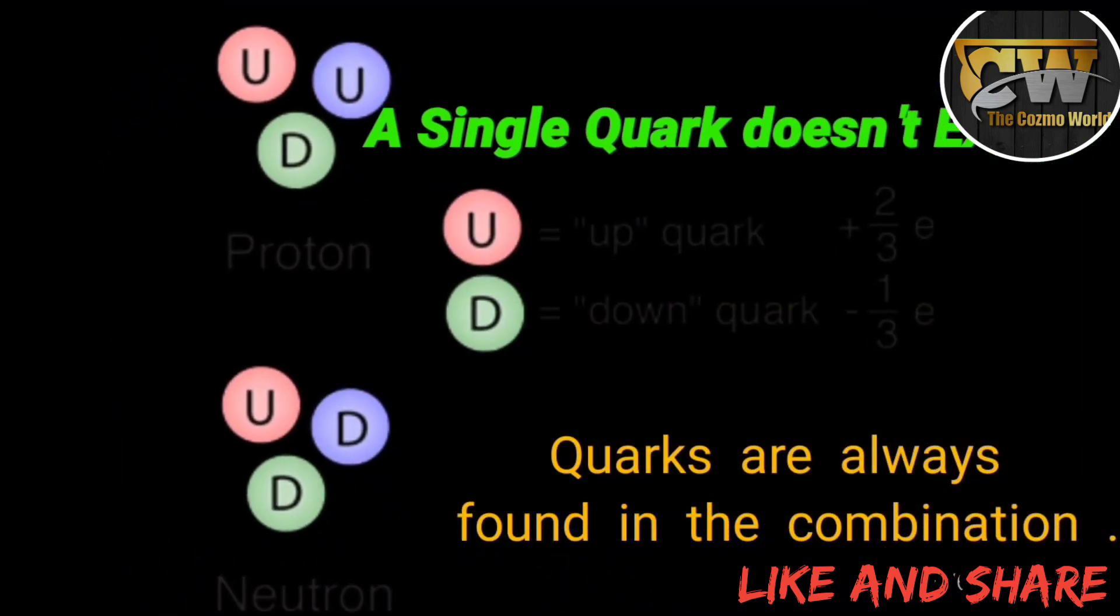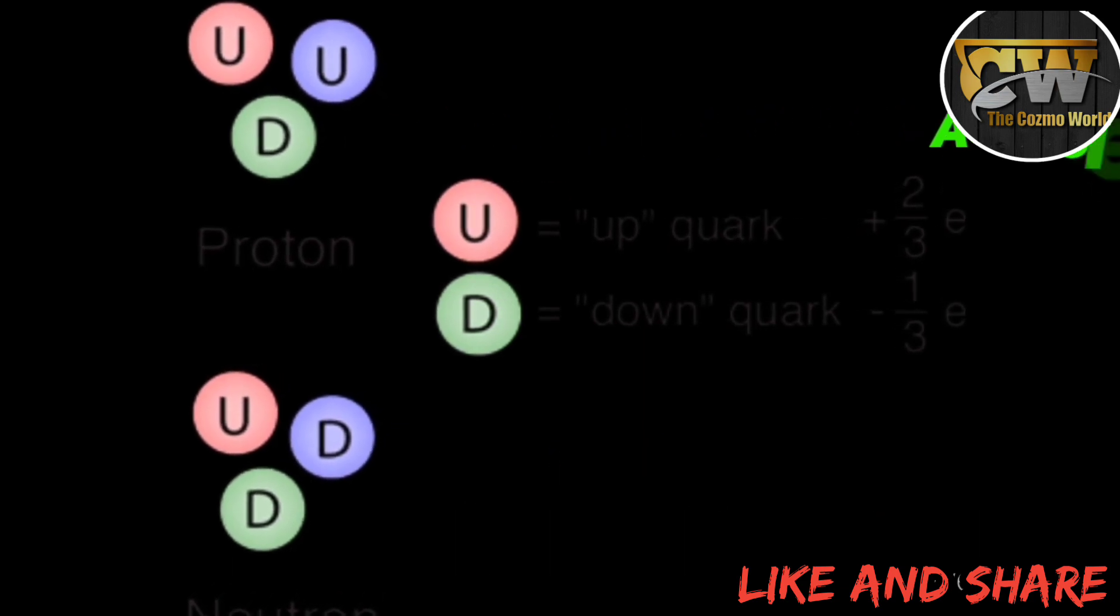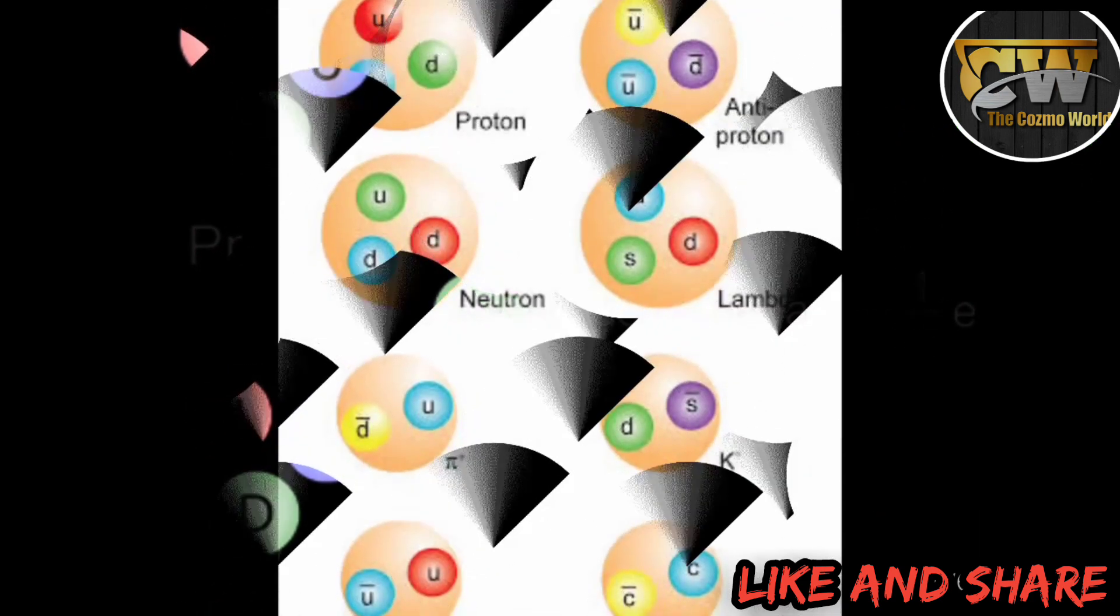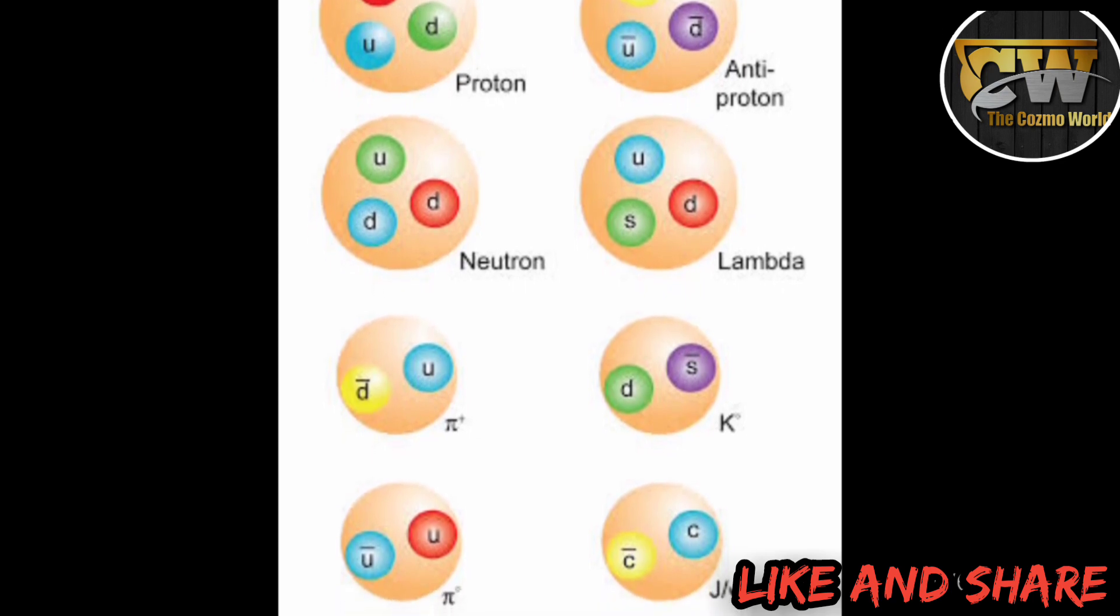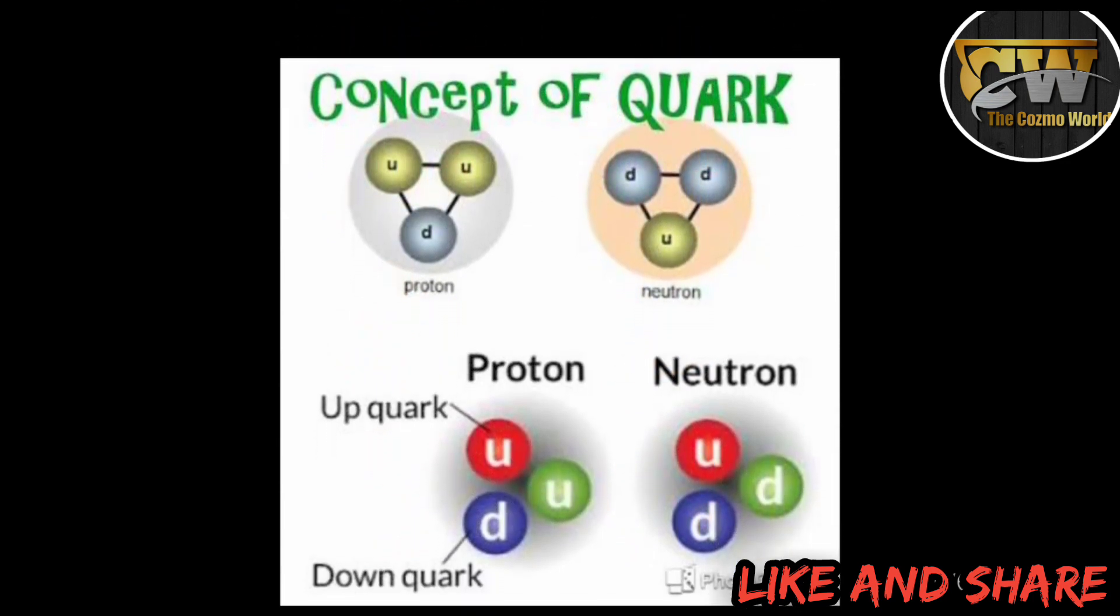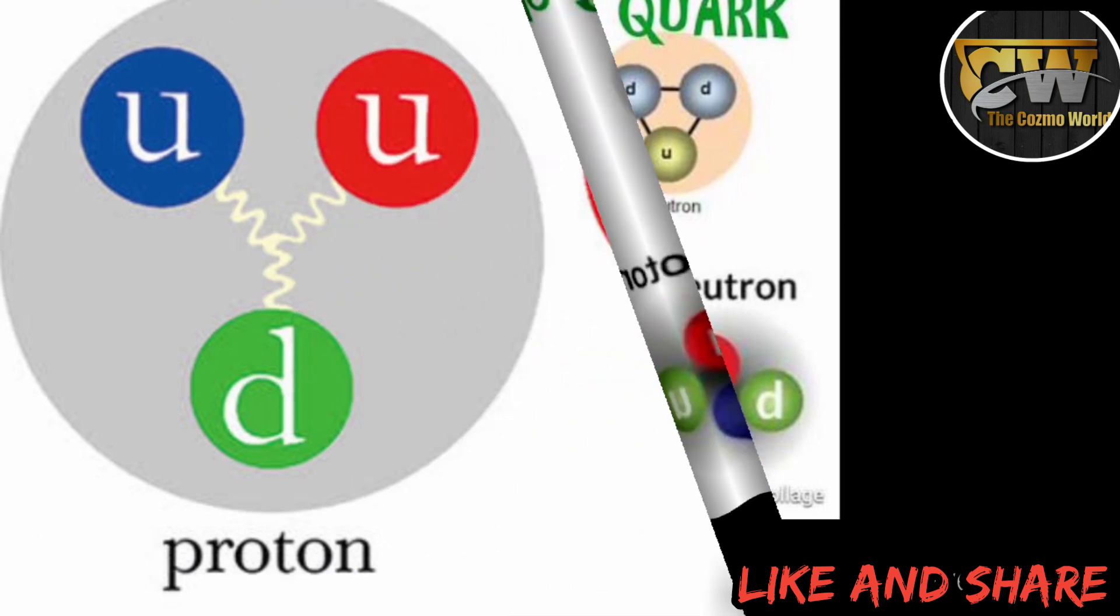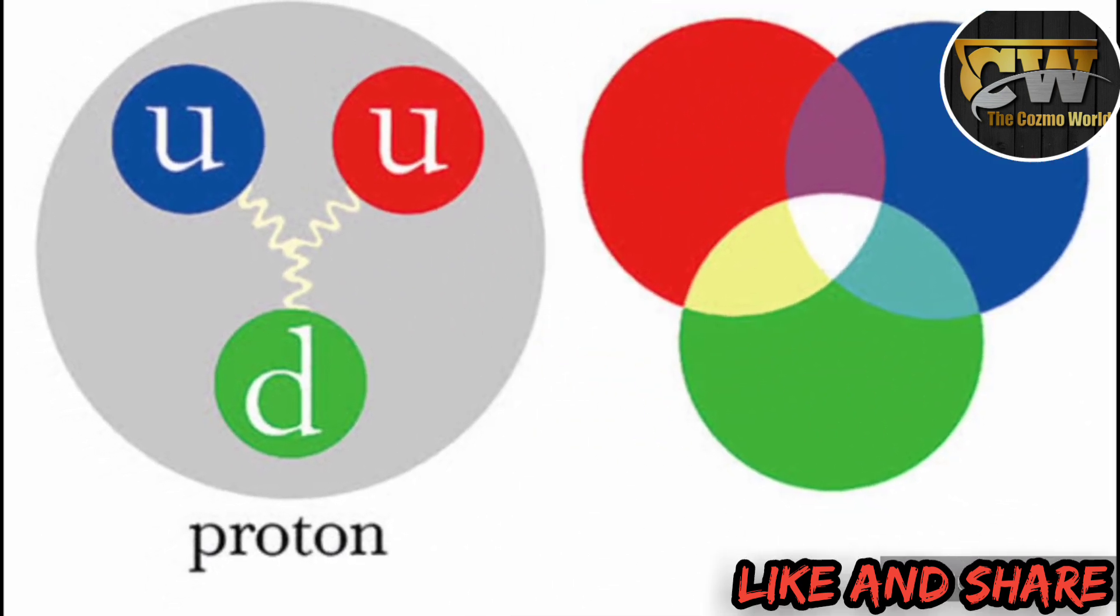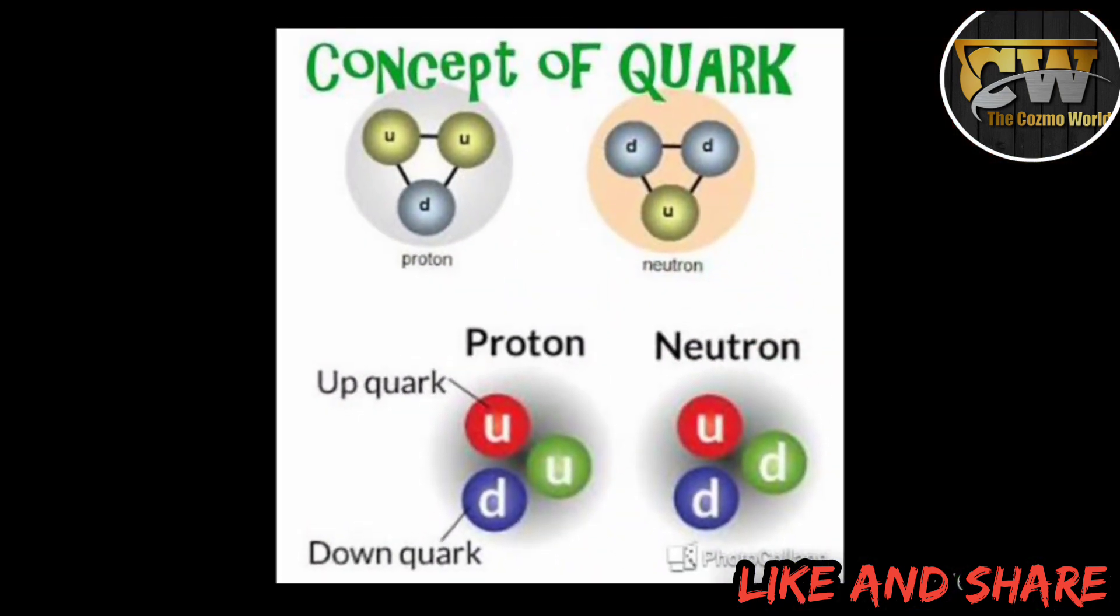Quarks are always found in combination and cannot, so far as known, occur by themselves. Quarks can combine in many different ways forming up to 100 different particles. The combination of quarks determines the type of particles formed. For example, a proton is composed of two up and one down quarks, while a neutron is composed of one up and two down quarks.